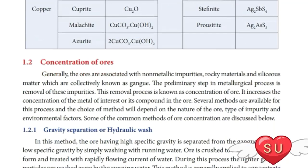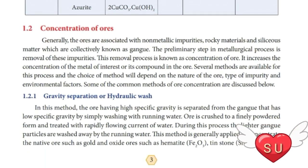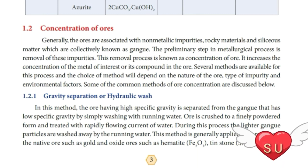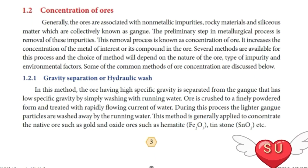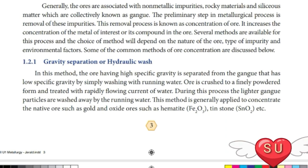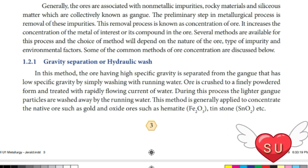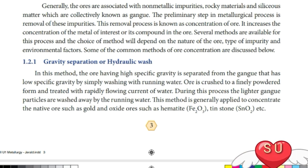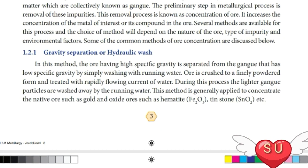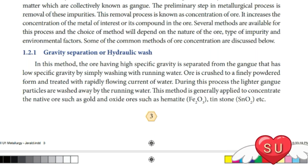Next is concentration of ores. Generally, the ores are associated with some impurities such as non-metallic impurities, rocky materials and siliceous matter, which are collectively known as gangue. The first step is to remove these impurities. This removal process is known as concentration of ores. By this process, we can increase the concentration of the metal of interest or its component in the ores.